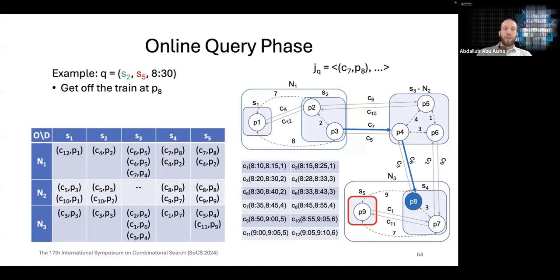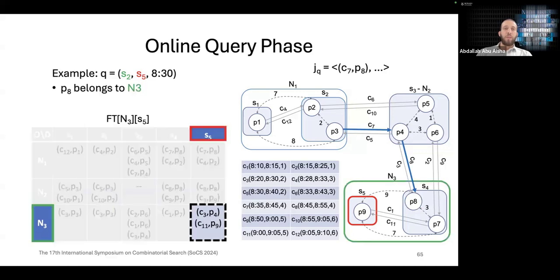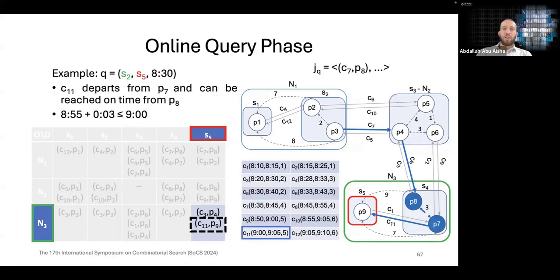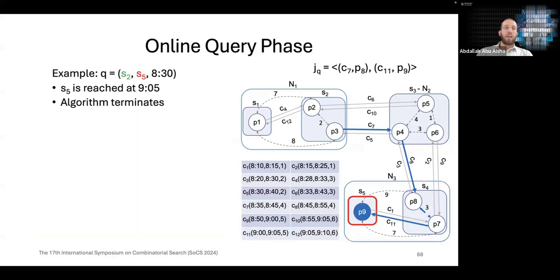At stop P8, we get off the train. And then, because P8 belongs to N3, we now look at cell FT N3, S5. N3, S5 have two paths again. And the first reachable one in this case is C11, C9. Because C11 departs from P7, and we are currently at P8, we have to check first if we can catch C11 when we transfer from P8 to P7. In this case, this is possible. So we can walk from P8 to P7 and catch C11. And then, because we arrived at S5 at time 9:05, the algorithm terminates as we reach the destination.